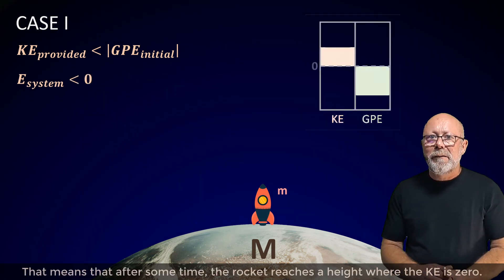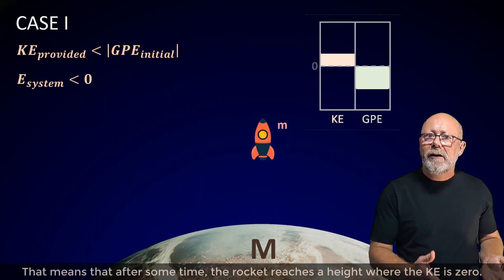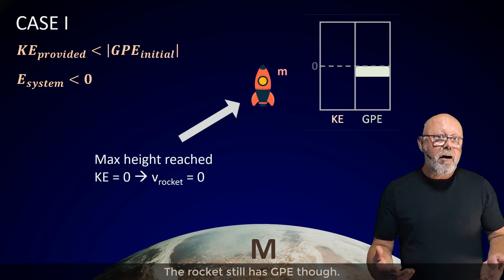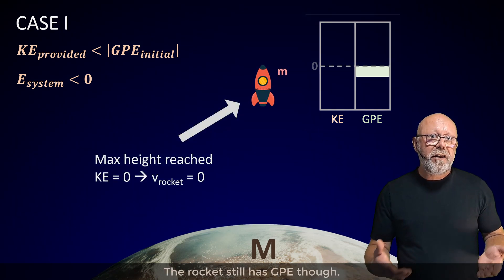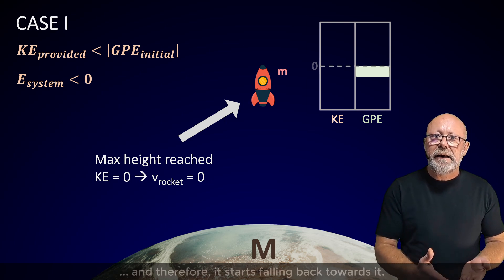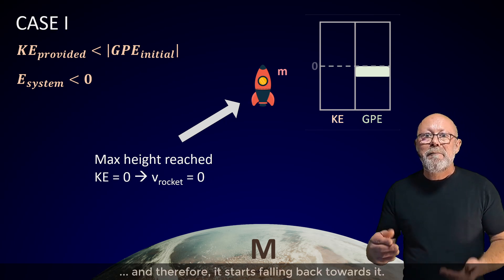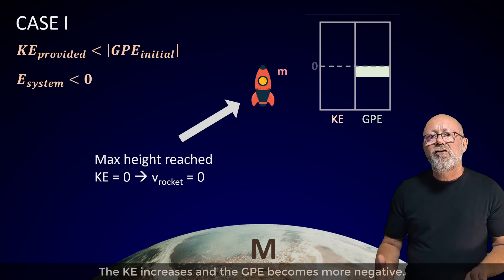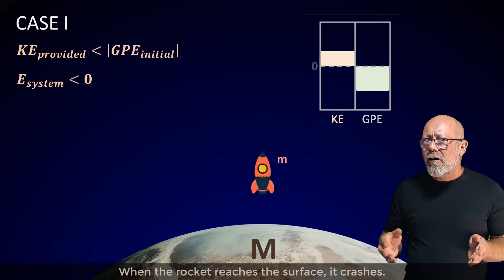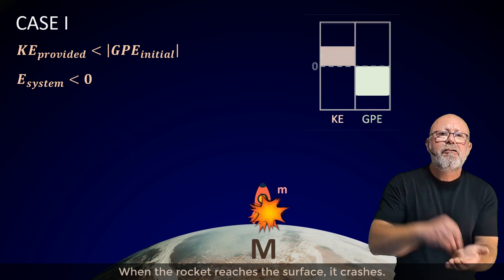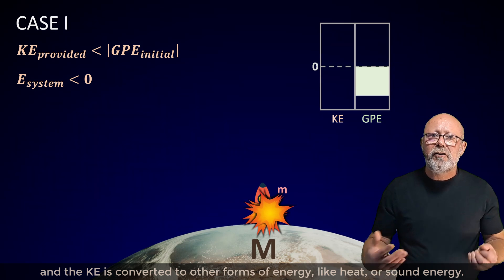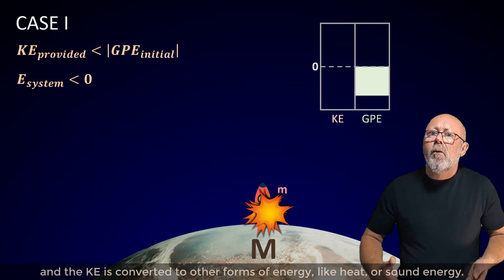That means that, after some time, the rocket reaches a height where the kinetic energy is zero. At that point, it stops moving. The rocket still has gravitational potential energy, though. That means it is still within the gravitational field of the planet, and therefore it starts falling back towards it. The kinetic energy increases, and the gravitational potential energy becomes more negative. When the rocket reaches the surface, it crashes, and the kinetic energy is converted to other forms of energy, like heat or sound energy.